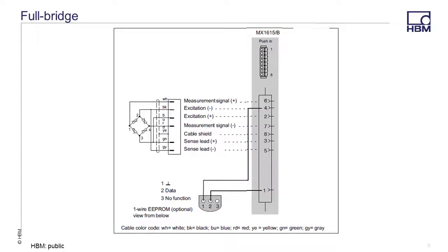Here is the full-bridge wiring connection for an MX1615B. Note that the MX1615B supports six wire bridge connection. Therefore, if you have a full bridge with only four wires in the cable, you must jumper the sense leads to the excitation leads at the connection to the amplifier.